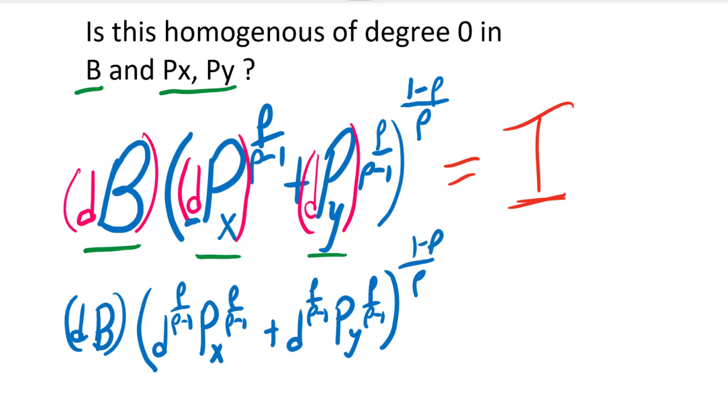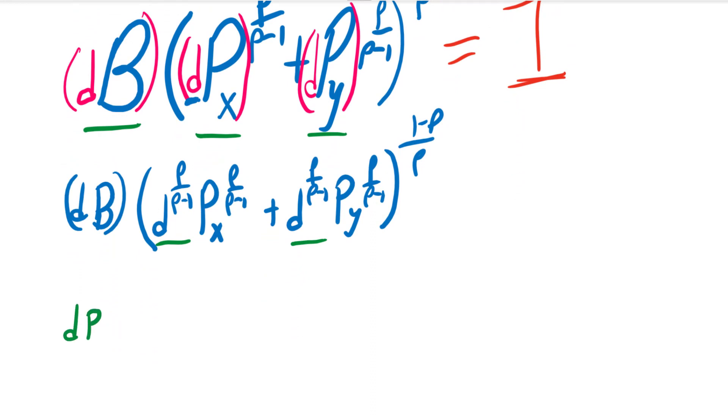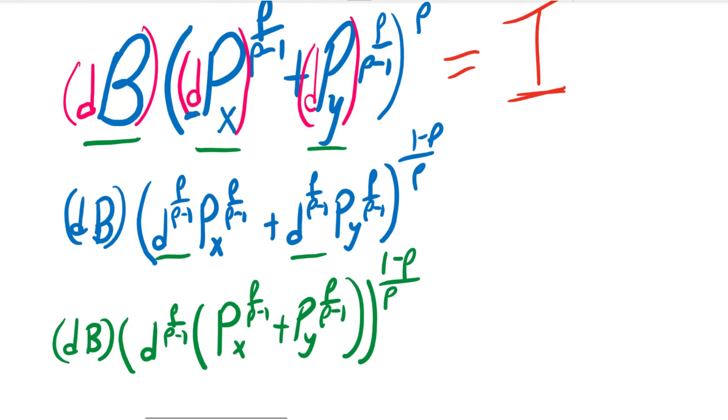And so now what we want to do is collect those two D terms here. We're going to have D times the budget on the outside, and then we're going to have D^(ρ/(ρ-1)) times the price of X and the price of Y terms there. So Pₓ^(ρ/(ρ-1)) plus Pᵧ^(ρ/(ρ-1)), all that raised to the (1-ρ)/ρ.